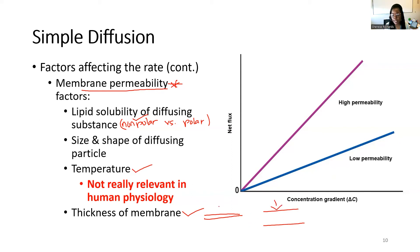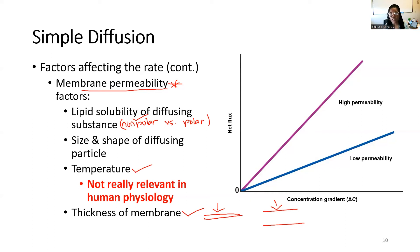It's going to be harder for particles to get through a thicker membrane than a thinner one. An important point to re-emphasize here is that the factors described — lipid solubility, particle size, temperature, and membrane thickness — are only relevant to the membrane permeability, and the membrane permeability in turn affects the rate of simple diffusion.